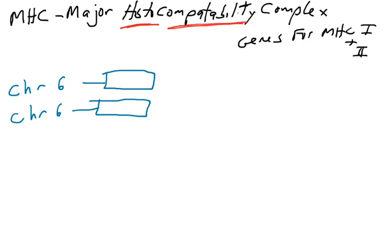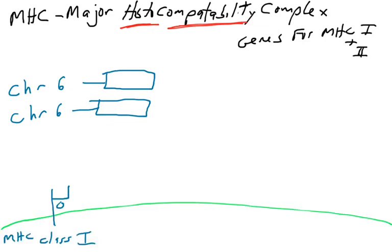MHC — major histocompatibility complex. We've been talking a lot about MHC1 and MHC2 molecules, and this is going to focus just on MHC1. The genes that encode for the proteins in MHC1 are found on chromosome 6. You have two copies of chromosome 6 — one maternal and one paternal. MHC1 is made of two proteins: the alpha protein and the beta-2 microglobulin protein. The alpha protein is what binds the peptide and presents it to T cells.